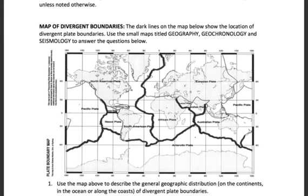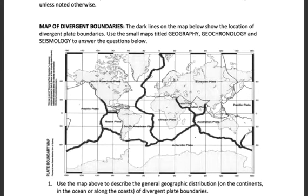You'll see a dark line kind of wiggling its way up and down the Atlantic and around different parts of the world — that is the location of divergent boundaries. You'll see there are other boundaries too, the thin lines, but we'll deal with those later. For now, we want to just focus on those divergent boundaries.